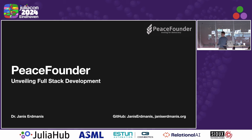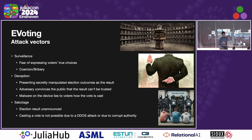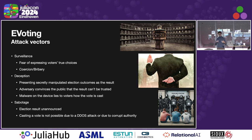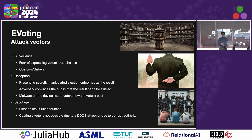To understand what the stack solves and what it involves, let's understand the e-voting problem. Securing e-voting systems essentially means defending against three main threats. Surveillance — knowing how voters cast their votes can influence their choices due to coercion and bribery. There is deception — election authorities can secretly manipulate election results, or there could be an adversary which erodes trust about election results. Also, voting devices themselves can lie to voters about how they cast their vote. And lastly, there is sabotage — disrupting the voting process itself, preventing the result announcements.